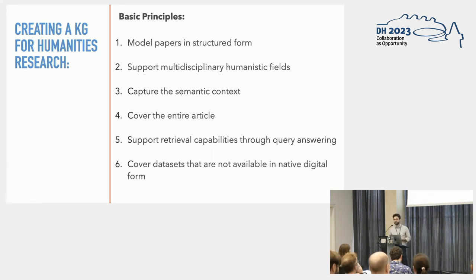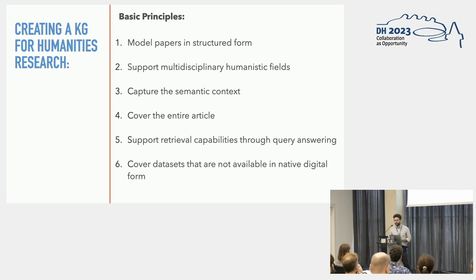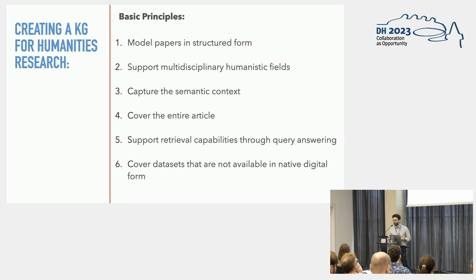To achieve that, we need to cover the entire article — we cannot stay just in the article's metadata or abstract, because that information is usually in the article's main text. We want to support retrieval capabilities and be able to answer semantic queries, and that's why our end result is in the form of a knowledge graph in RDF format. Of course, we also need to be able to cover the datasets that are not available in native digital form.